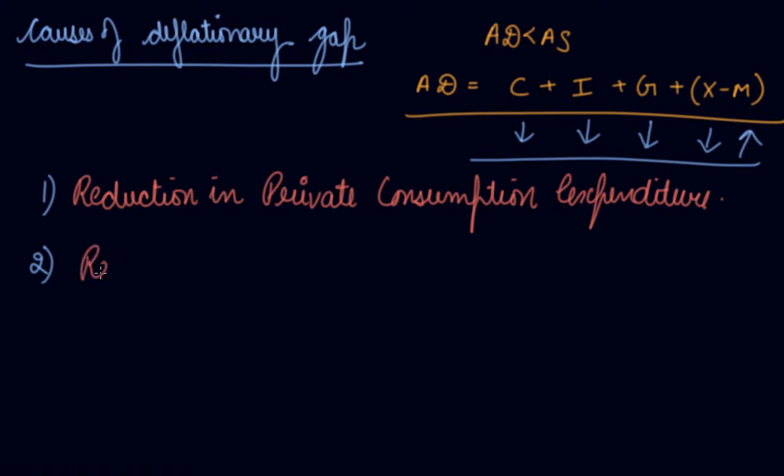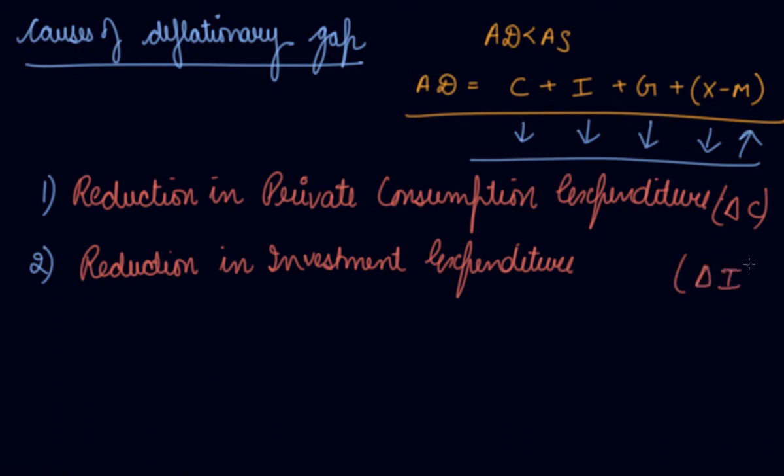Reduction of the investment expenditure. This is your change in C and this is your change in investment. So investment expenditure is the other important component of aggregate demand, and a reduction in the investment implies a reduction in the aggregate demand. So in this way aggregate demand reduces.